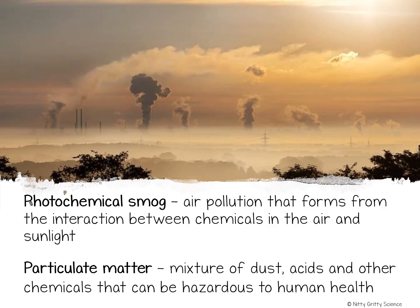Air pollution that forms from the interactions between chemicals in the air and sunlight is smog, or photochemical smog. Smog forms when nitrogen dioxide, which is released from exhaust of gasoline engines, reacts with sunlight. A series of chemical reactions will produce ozone and other compounds that form smog. Smog in urban areas reduces visibility and makes air very difficult to breathe.